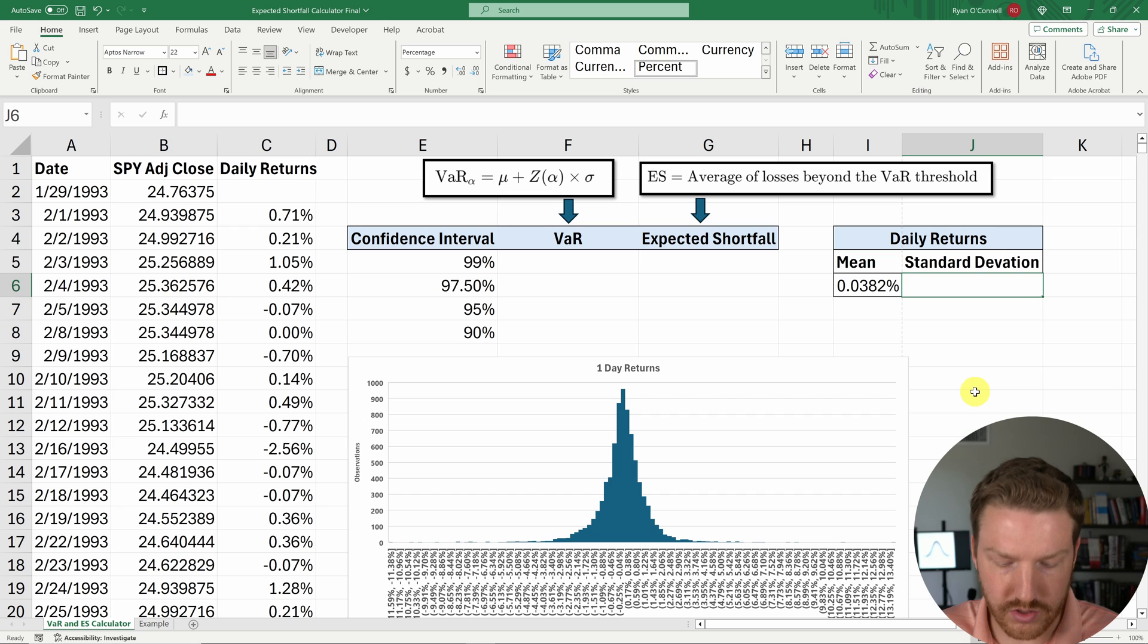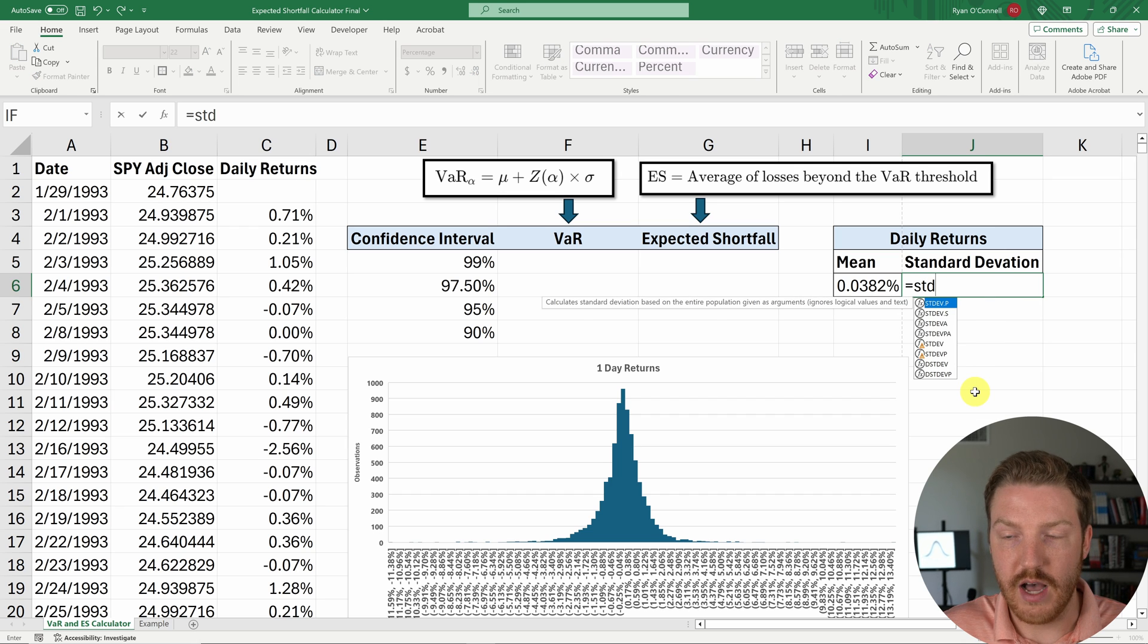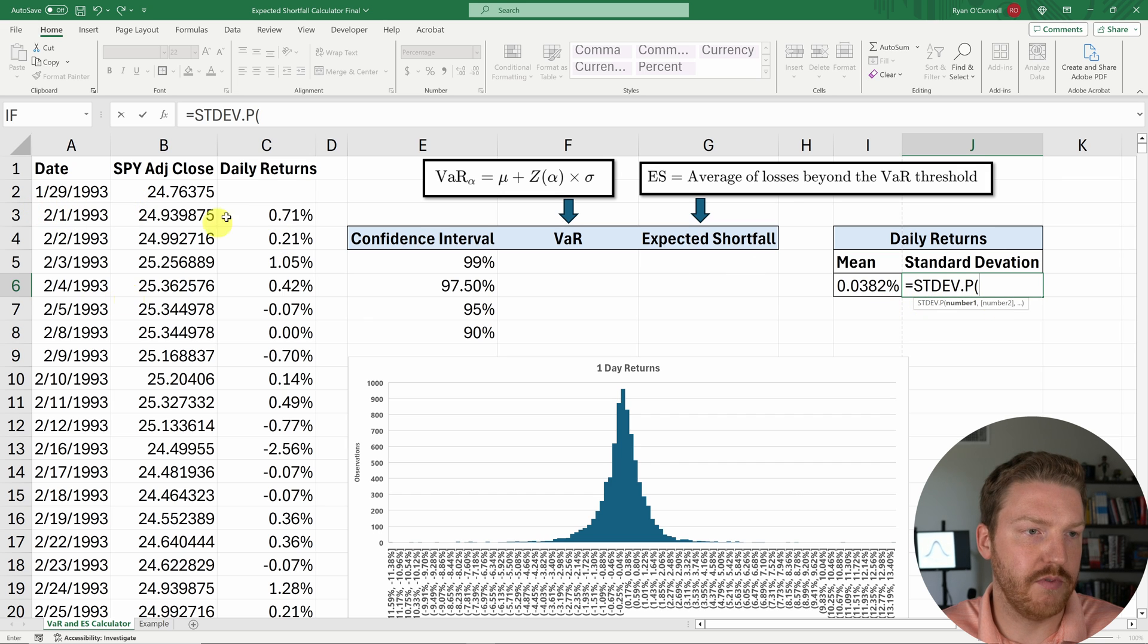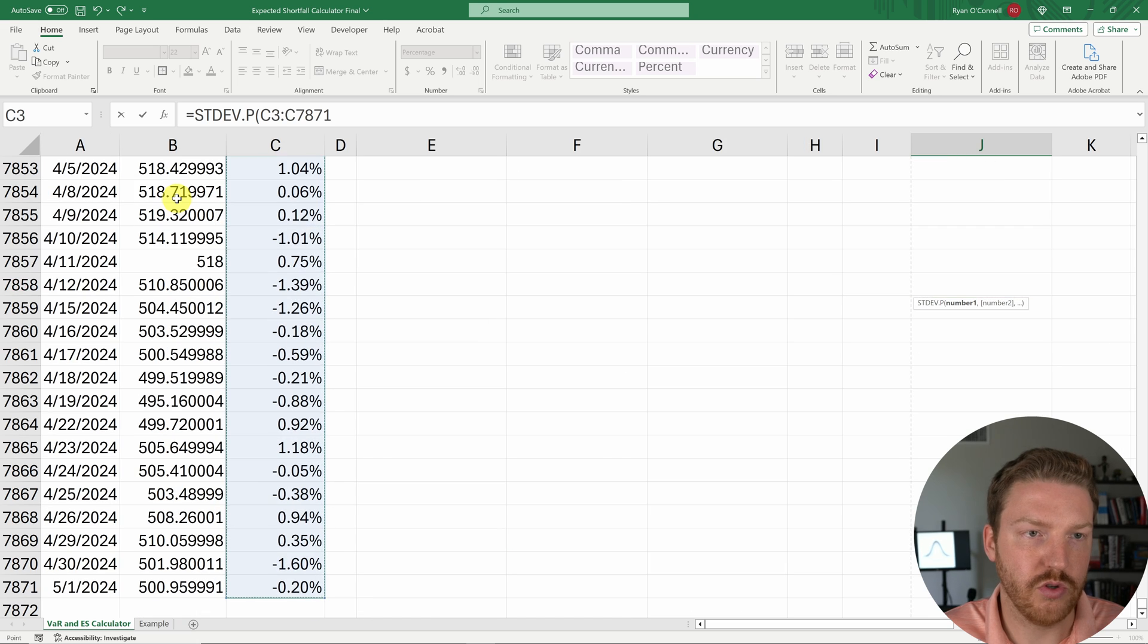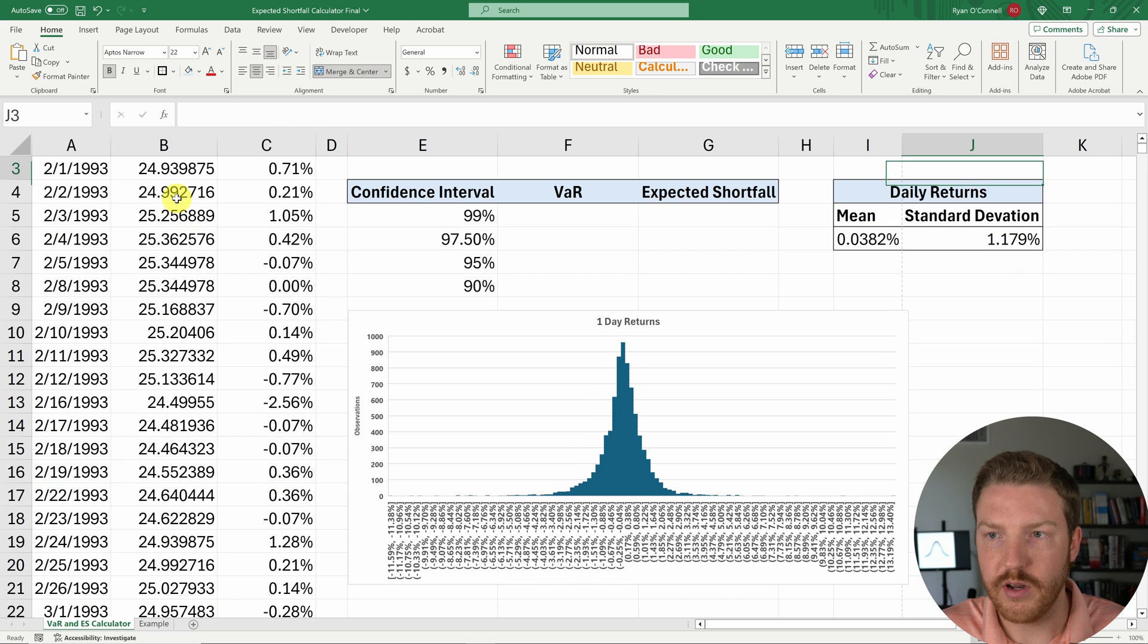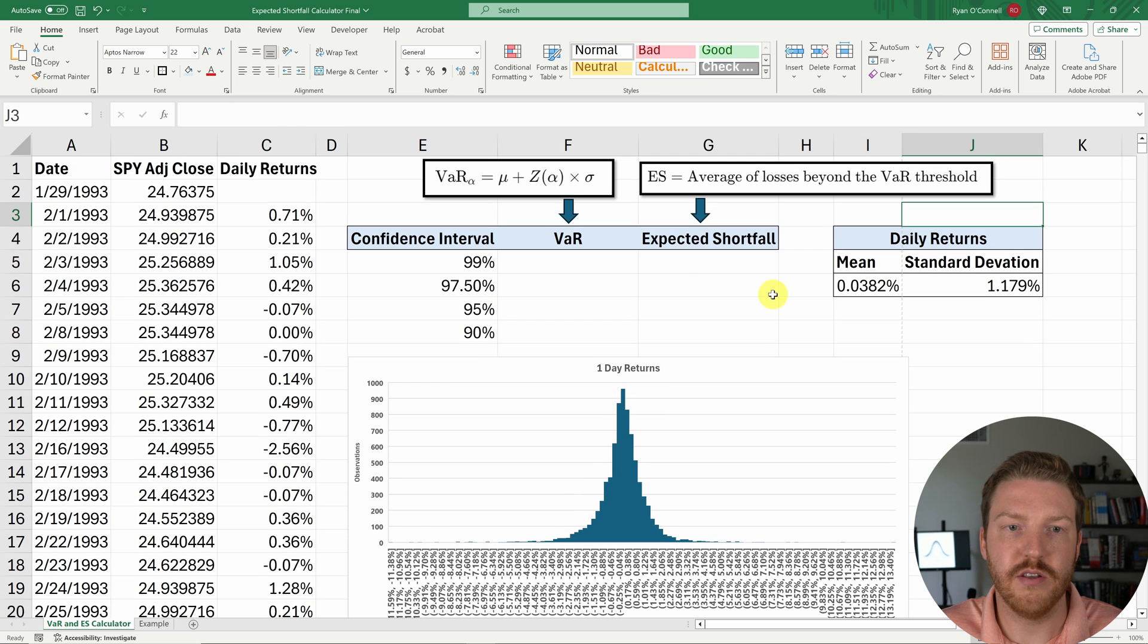And now we need the standard deviation of the daily returns, which is going to be equal to STDEV.P. I'm going to use .P because I really do have the full population of all of the SPY returns since it began. And I'll hit control shift down arrow, enter. And now we find our daily standard deviation.